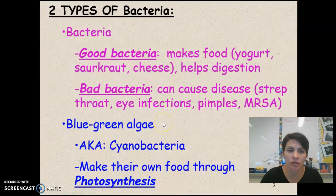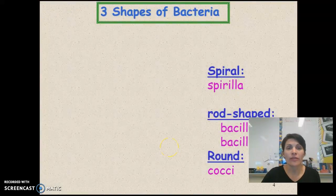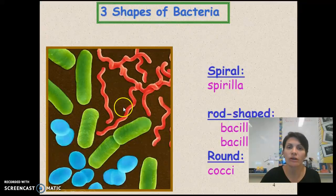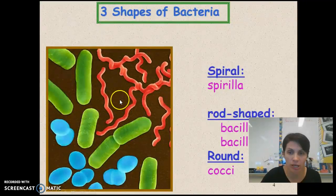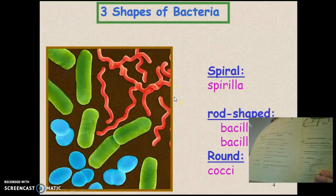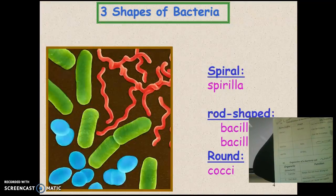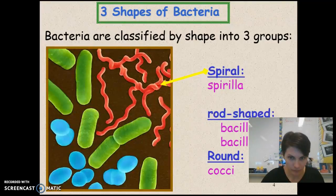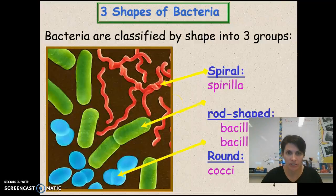Make sure you have down on your notes good and bad bacteria. Moving on — there are three shapes of bacteria: round, rod, and spiral-shaped. Now we're on the inside of your note sheet for shapes of bacteria. There are the spiral, the rod, and the round bacteria.